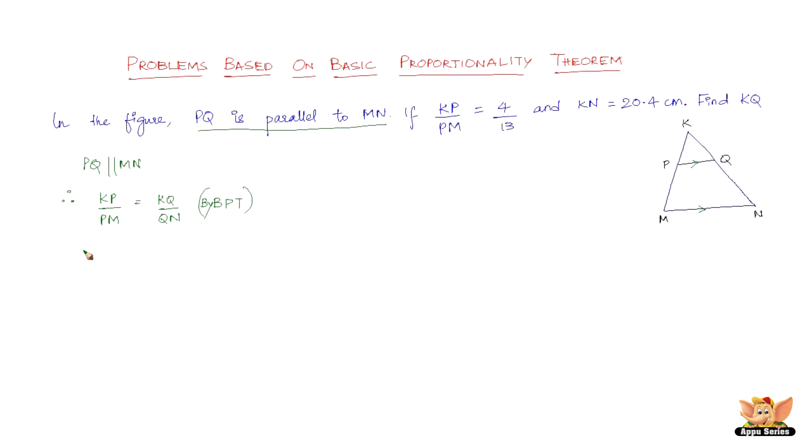So now, we've got KP/PM as 4/13 and we've also got KN as 20.4. We need to find KQ. So how do we solve this? Let's retain KP/PM. Let us also write KQ as it is. But QN can be written...